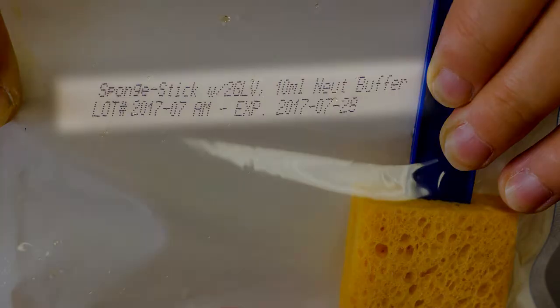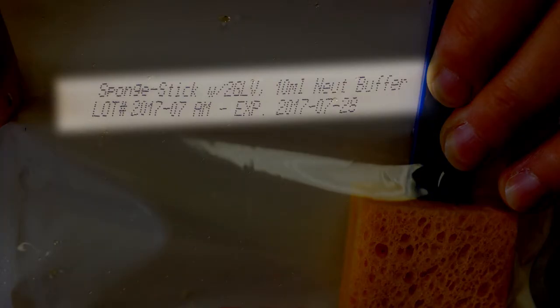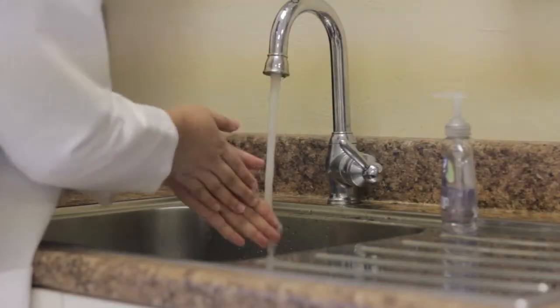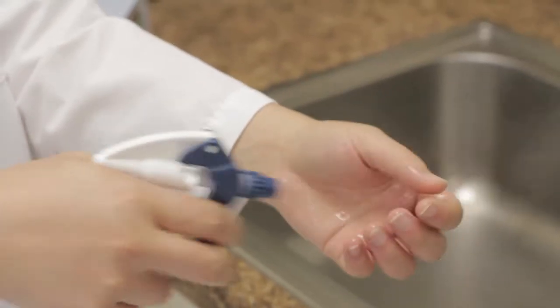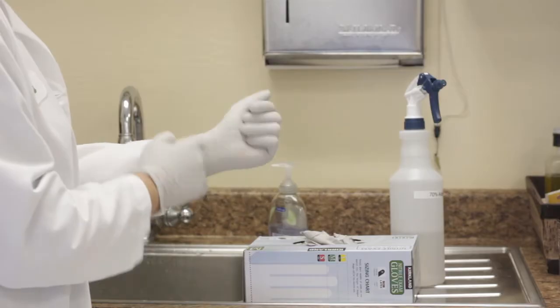Always remember to check the expiration date and integrity of the swabs and sponges before use to avoid contaminating the samples. Wash hands with soap and water, dry them with a paper towel, and apply sanitizer after hands are dry. Wear clean gloves and apply hand sanitizer to the gloves.